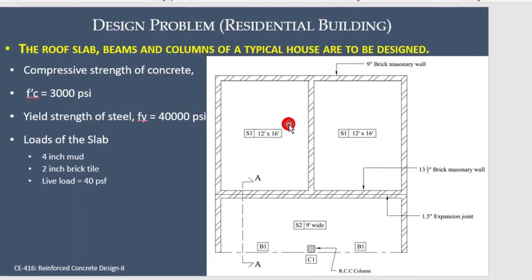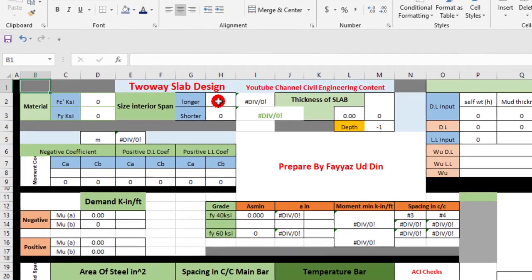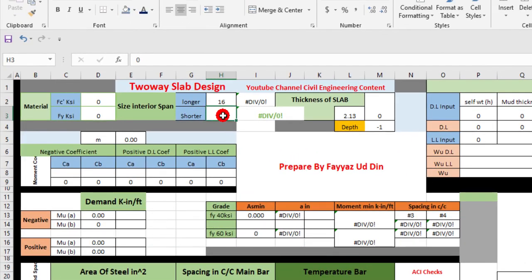First we check the slab whether it is a two-way slab or one-way slab. The dimensions of this slab are 12 feet by 16 feet, and the slab is 9 feet wide. The longer dimension becomes 24.75 feet. The longer dimension is 16 feet and the shorter dimension is 12 feet, and the ratio is less than 2, which shows that it is a two-way slab.